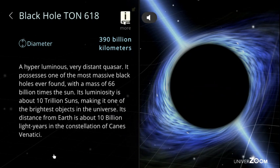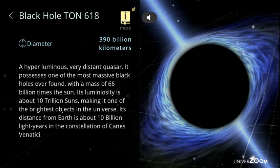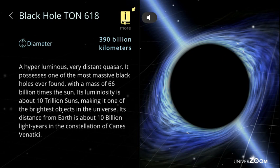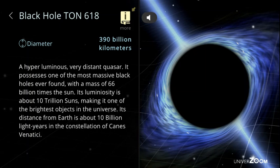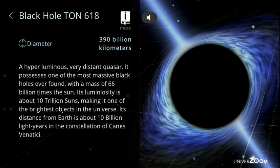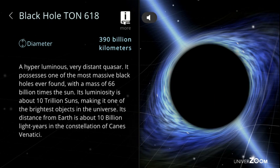Black hole TON 618, diameter: 390 billion kilometers. A hyperluminous, very distant quasar. It possesses one of the most massive black holes ever found, with a mass of 66 billion times the sun. Its luminosity is about 10 trillion suns, making it one of the brightest objects in the universe. Its distance from Earth is about 10 billion light years in the constellation of Canes Venatici.